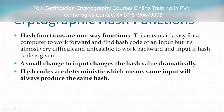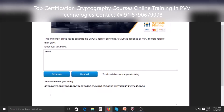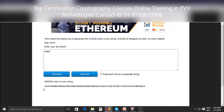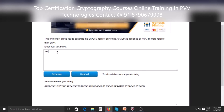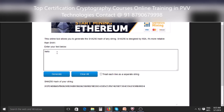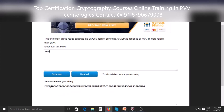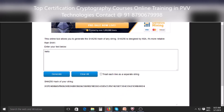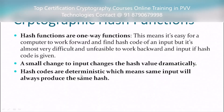Hash codes are deterministic, which means the same input will always produce the same hash. Let's see this property in a demo. As I created the hash code with 'hello', it was always 2cf2, etc., ending with 24. If I change it back to 'hello' again, the same hash code is generated. Whenever I put the word 'hello', the same hash code will be generated, which means it is deterministic — same input will always produce the same hash.